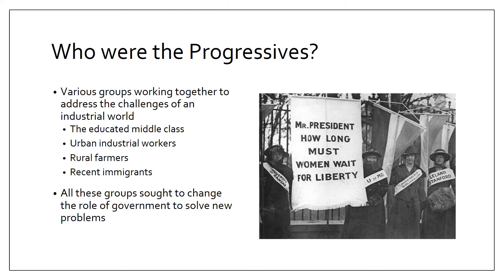Several groups got involved. One of the most important was the educated middle class — people like lawyers, doctors, teachers, and university professors. In previous years, these people had tended to be pretty conservative and support big business. But as trusts continued to develop, they started to realize that big businesses were becoming too powerful and risked eliminating the power of the educated middle class itself. So they used their education, money, and influence to fight back against big business and corrupt government.